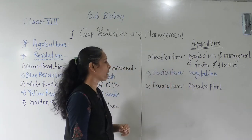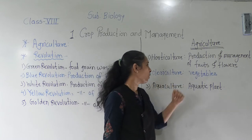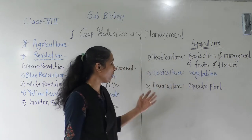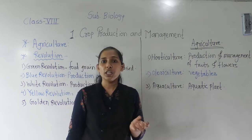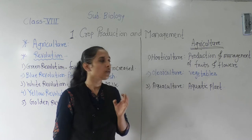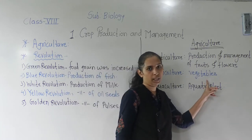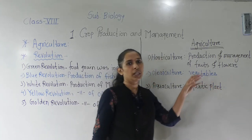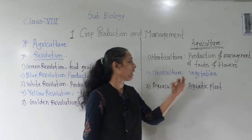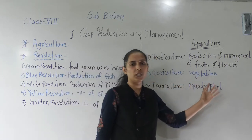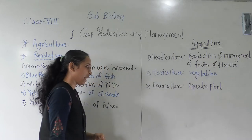The next branch of agriculture is Olericulture. Olericulture is the branch of agriculture which deals with the production and management of vegetables. In olericulture, we work to increase vegetable crops.